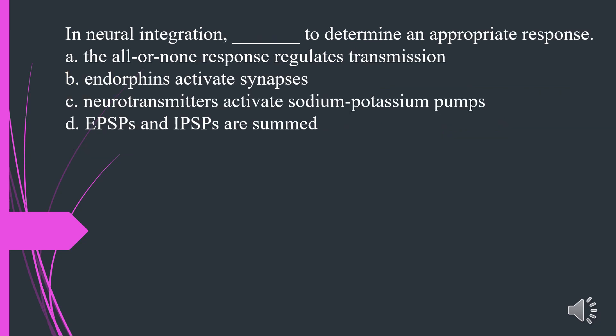In neural integration, what determines an appropriate response? A. The all-or-none response regulates transmission. B. Endorphins activate synapses. C. Neurotransmitters activate sodium-potassium pumps. D. EPSPs and IPSPs are summed. The answer is D. EPSPs and IPSPs are summed.